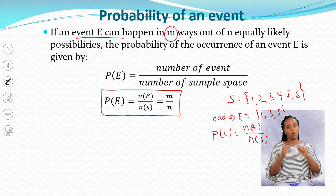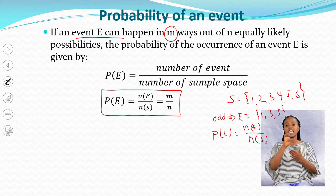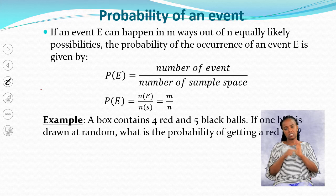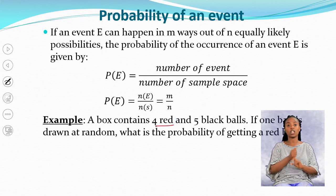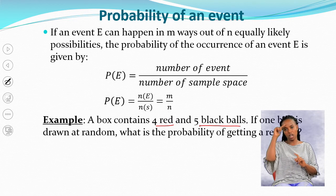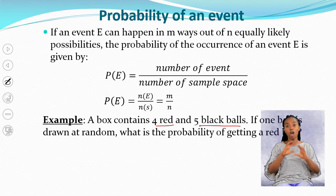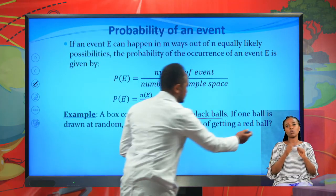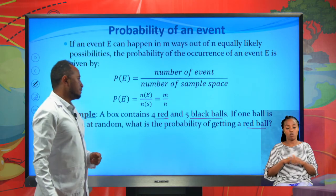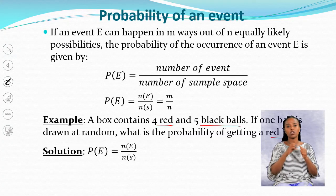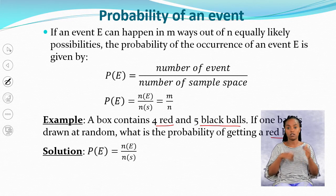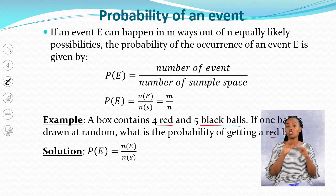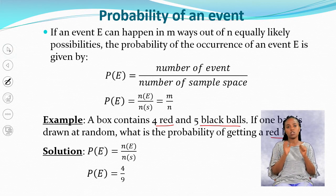The event is getting odd, so we have three possible outcomes. Therefore, the number of event outcomes is 3 divided by the sample space 6, giving 3/6 as the probability of getting an odd number when you roll a die. Now let's see another example: a box contains four red and five black balls. If one ball is drawn at random, what is the probability of getting a red ball?